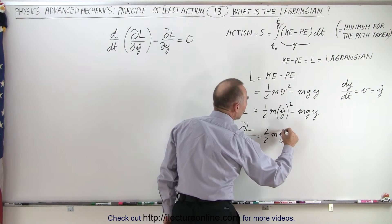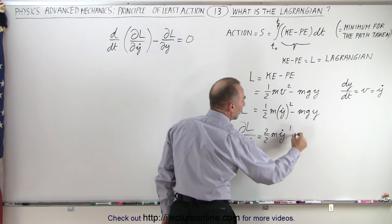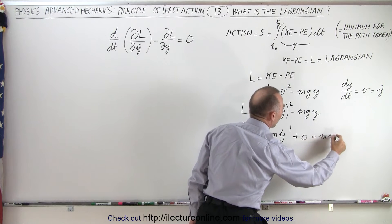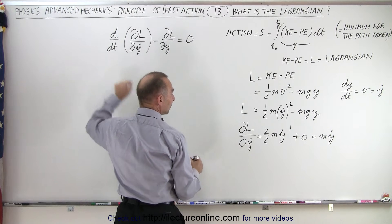and of course that would be plus zero here, but in other words, this is equal to m y dot. Okay, now let's take the derivative with respect to time of that. So now we take the derivative, the d dt,